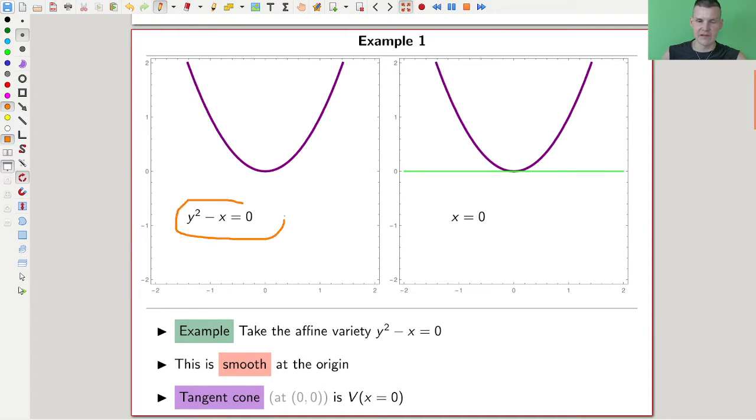The tangent to the parabola is clearly the x equals zero axis. The parabola formula I'm using here is y squared equals x. This is exactly this type of curve, the parabola we all know. I hope you know what a parabola is.